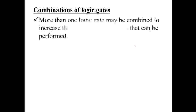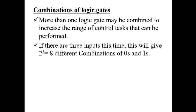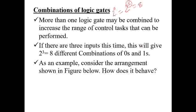We can also combine two or more logic gates to increase the range of control tasks that can be performed. For example, if there are three inputs, we use 2 to the power of 3, which equals 8. This gives us the number of rows (combinations of zeros and ones) needed in the truth table, where n is the number of inputs.